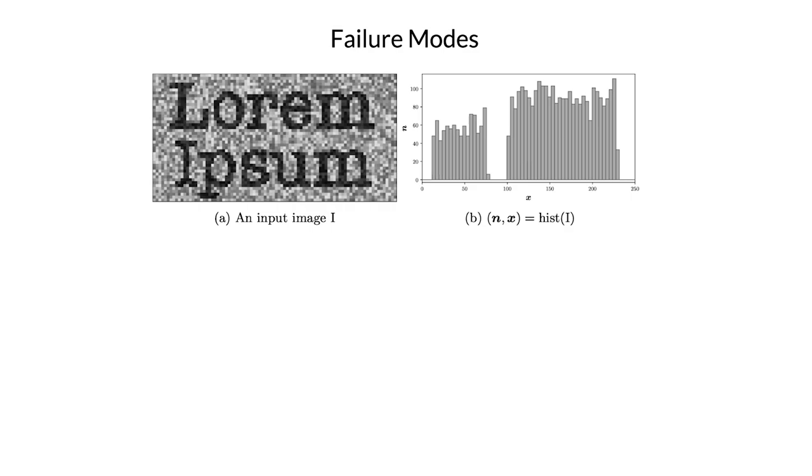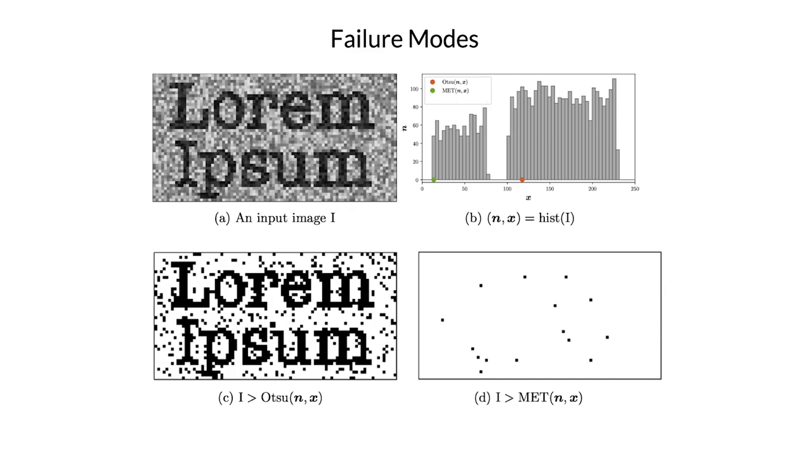So these classic algorithms can have some really strange failure modes in situations you probably wouldn't expect. Here's a toy image and its histogram where it's pretty clear where the optimal threshold probably should be. But both Otsu's method and MET pick really unexpected places to split the histogram in half. Otsu's method cuts the entire histogram in half right down the middle, and MET decides to use one of its Gaussians to model a single histogram bin and use its other Gaussian to model the entire rest of the histogram.